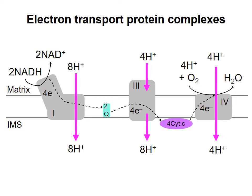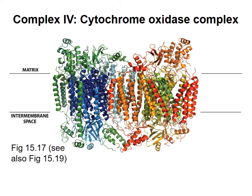I've been describing how electrons are moved from NADH to O2 via the complexes of the electron transport chain. In this video, we'll look at complex IV, which accepts electrons from cytochrome C. Complex IV is also called the cytochrome oxidase complex because it oxidizes cytochrome C.